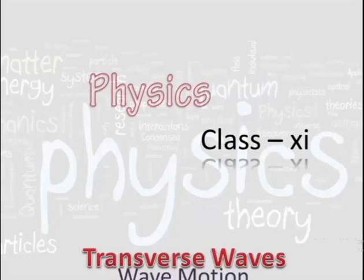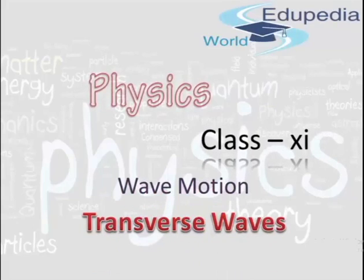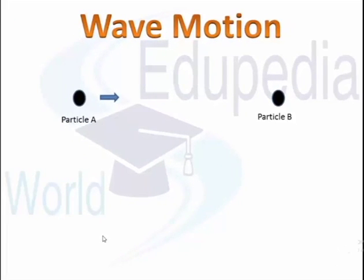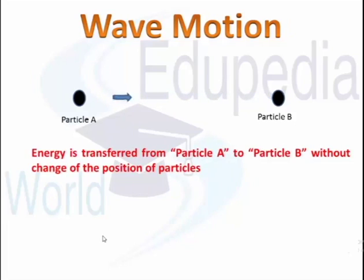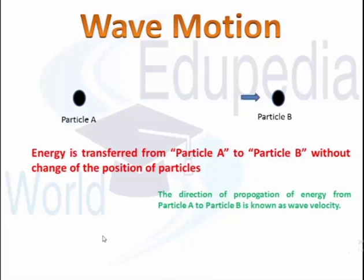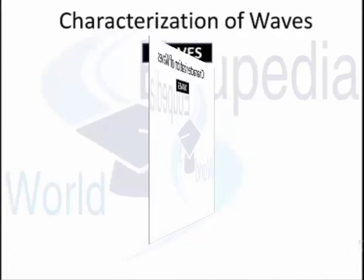Hello everyone. In this video we'll start learning about wave motion. The standard definition of wave motion is the propagation of energy without bulk motion of matter — energy being transferred from point A to point B while the particles may deviate slightly from their positions but there is no bulk motion of the particles. The direction of energy propagation is called the direction of wave velocity.